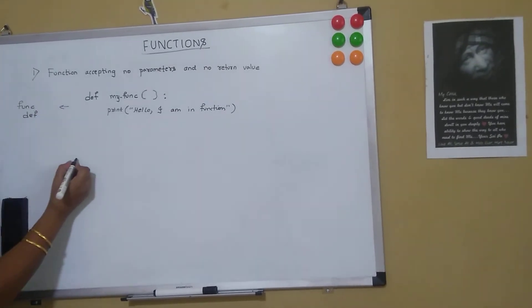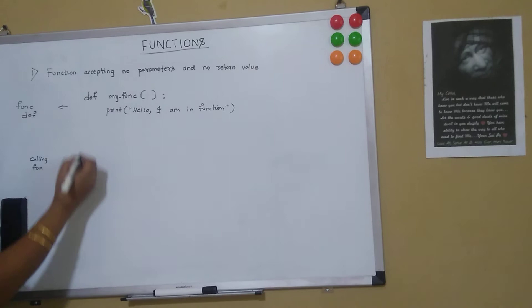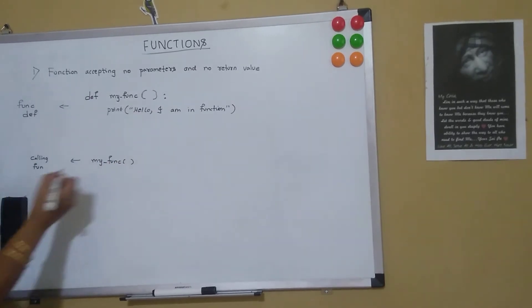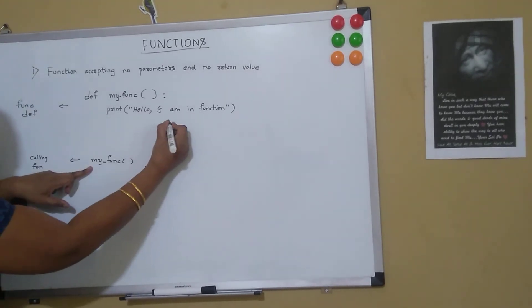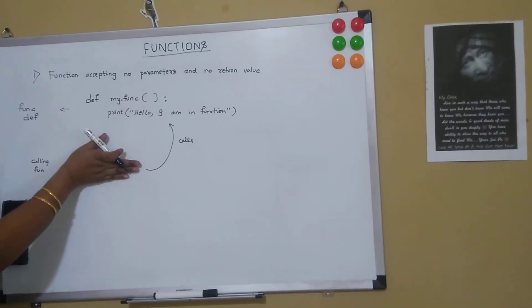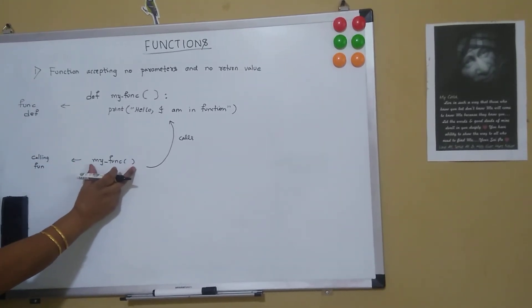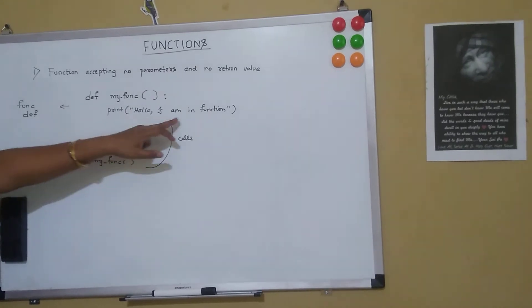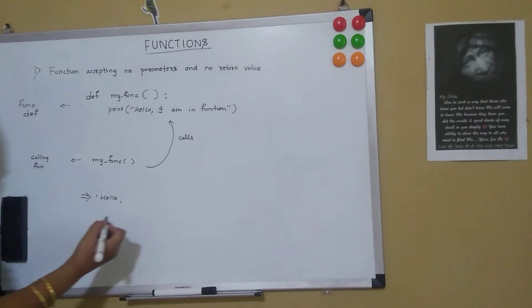We have to call the function using a calling statement. Here I am calling 'my_func' and I am not passing any parameters. Whenever the program encounters this statement, it calls the function my_func. If you don't give this statement, the function does not get executed. So it calls the function and it will print 'hello I am in function'.